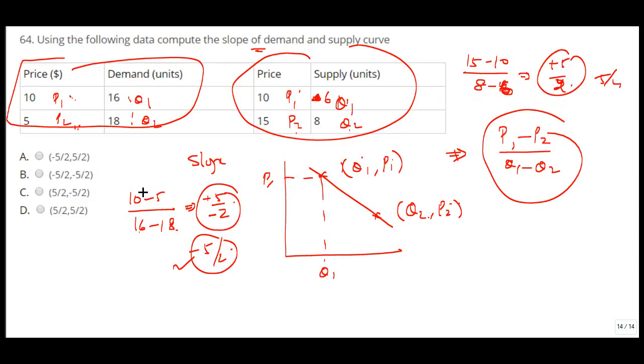So what we have is the answer option is minus 5 by 2 and plus 5 by 2. So this will be your answer.